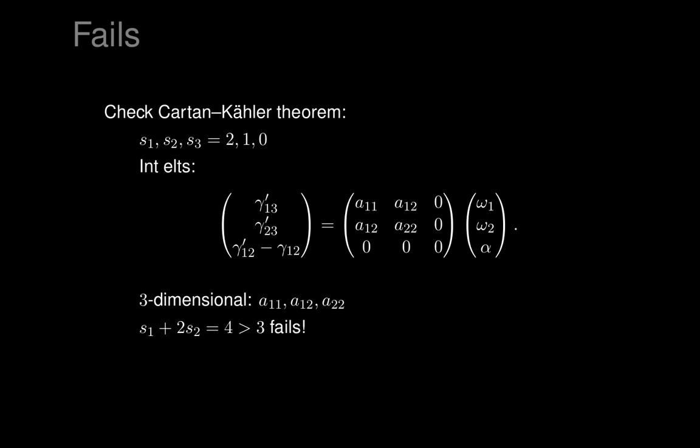It was calculated only at a point, but it's the same at every point, so it works out. Four is bigger than three, and Cartan-Kähler fails. What does that mean? What happens when Cartan-Kähler fails? What we've found is that Cartan-Kähler makes no prediction. The theorem predicts that if the predicted dimension equals the actual dimension, then you get integral manifolds, and you can count roughly how many.